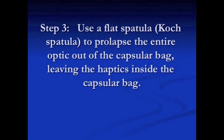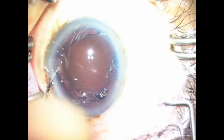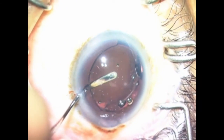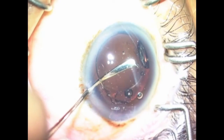Step 3. Use a flat spatula, such as a coke spatula, to prolapse the entire optic out of the capsular bag, leaving the haptics inside the capsular bag.